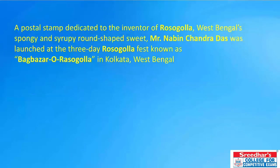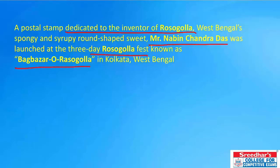The center has approved ₹1,146.12 crore for cyclone Gaja assistance for Tamil Nadu. A postal stamp dedicated to the inventor of Rasgulla, Mr. Nabin Chandra Das, was launched at a Rasgulla fest known as 'Bhog Bazar O Rasgulla' held in Kolkata, West Bengal. Rasgulla is West Bengal's spongy and syrupy round-shaped sweet, invented by Mr. Nabin Chandra Das.